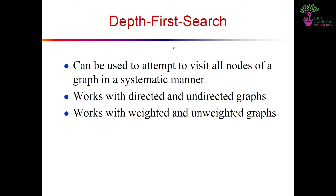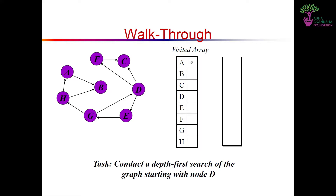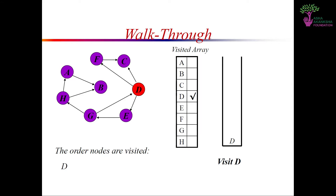The ideology behind DFS is that we explore deeper in the graph whenever possible. Edges are explored out of the most recently discovered vertex V that still has unexplored edges. We go vertex by vertex; if that vertex V has an edge leading to a vertex which has not been explored yet, we go to that vertex and repeat this until we go through all vertices. When all edges have been explored, we backtrack to the vertex from which V was discovered. DFS can be used to visit all nodes of a graph in a systematic manner.